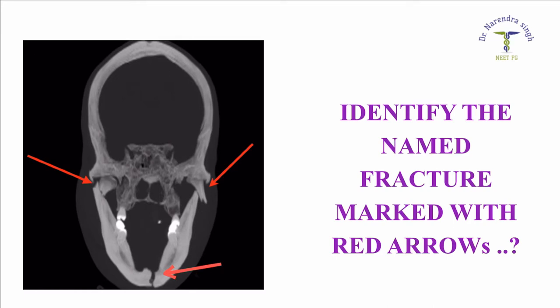Welcome once again. Today we will be discussing a new question in ENT. The question is to identify and name this very famous named fracture which has been shown on the CT scan of the head and neck region. In the CT scan, three red arrows are shown, each pointing at a site of fracture.